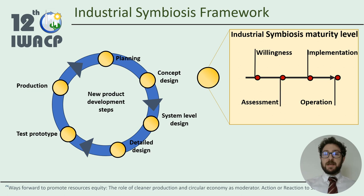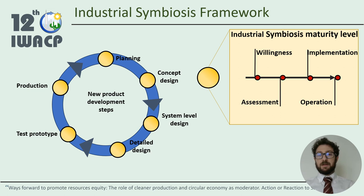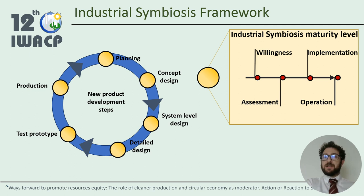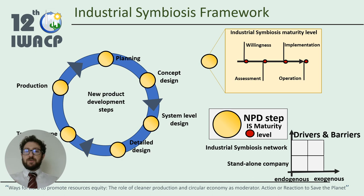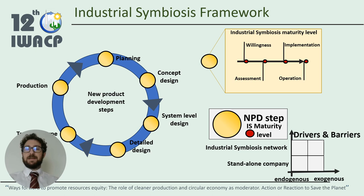The second layer that affects the drivers and barriers is the industrial symbiosis maturity level. The companies described in the papers can be at a different stage of industrial symbiosis maturity level — from willingness to develop a new industrial symbiosis, which is an exploratory stage, to the operation stage, in which companies face operational issues such as the variable quality of received waste. The combination between the two layers — new product development stage and industrial symbiosis maturity level — allows a better comprehension of barriers and drivers experienced by the companies, because it allows identifying a deeper interconnection between root causes and potential facilitations.